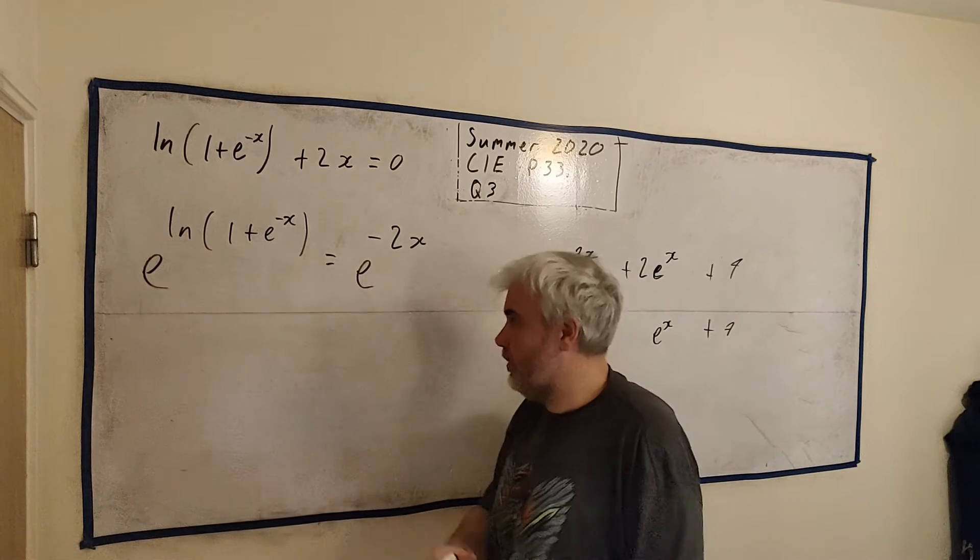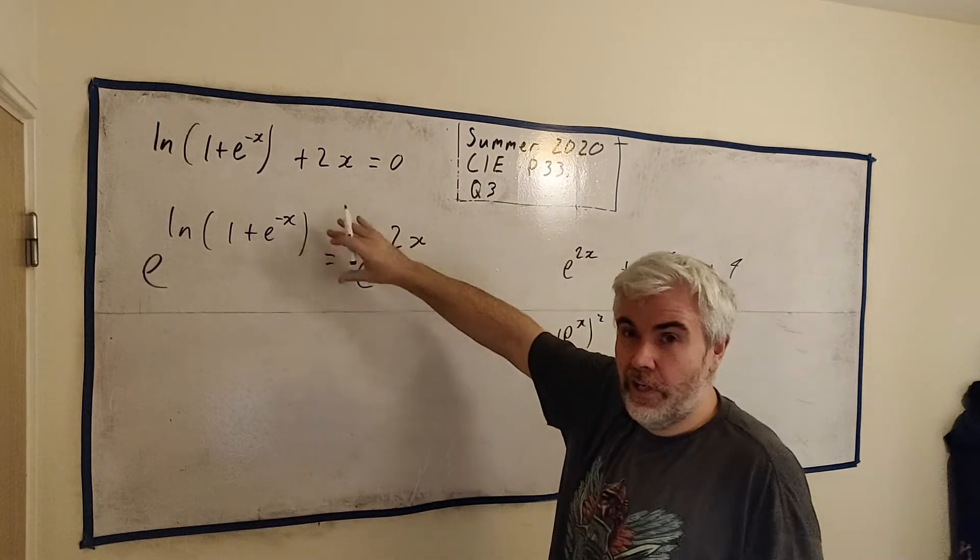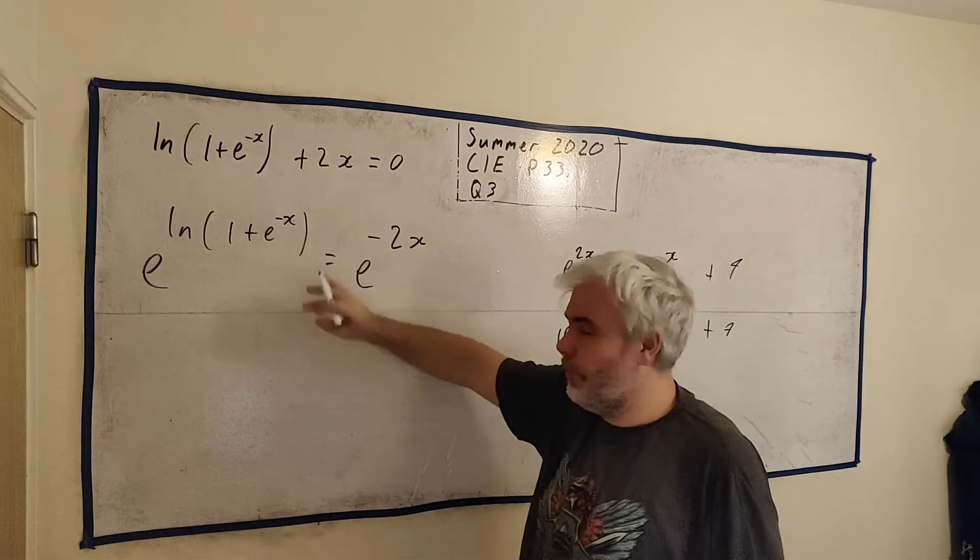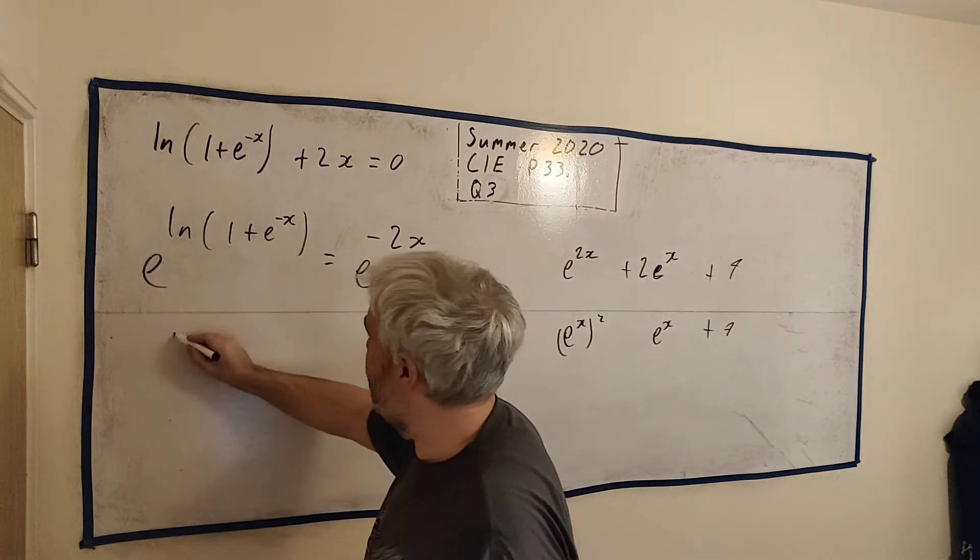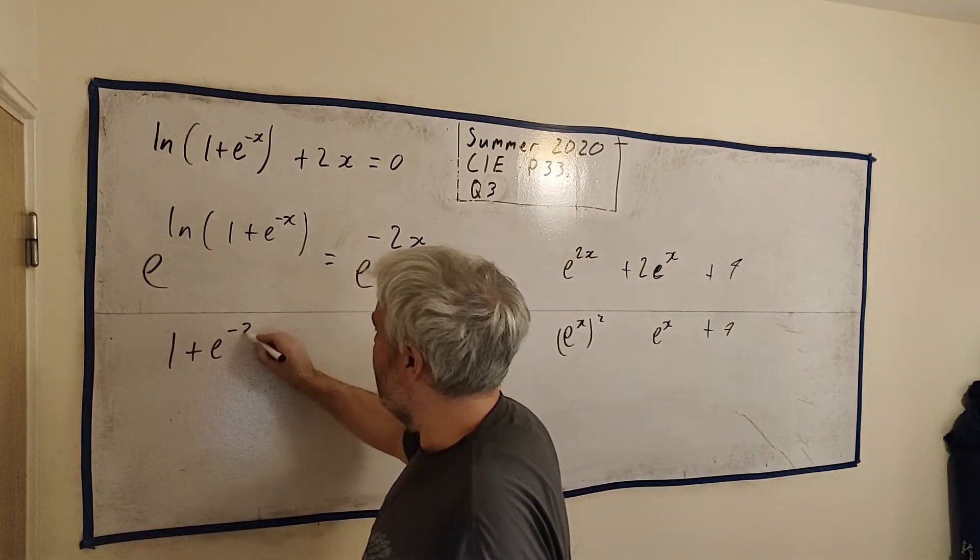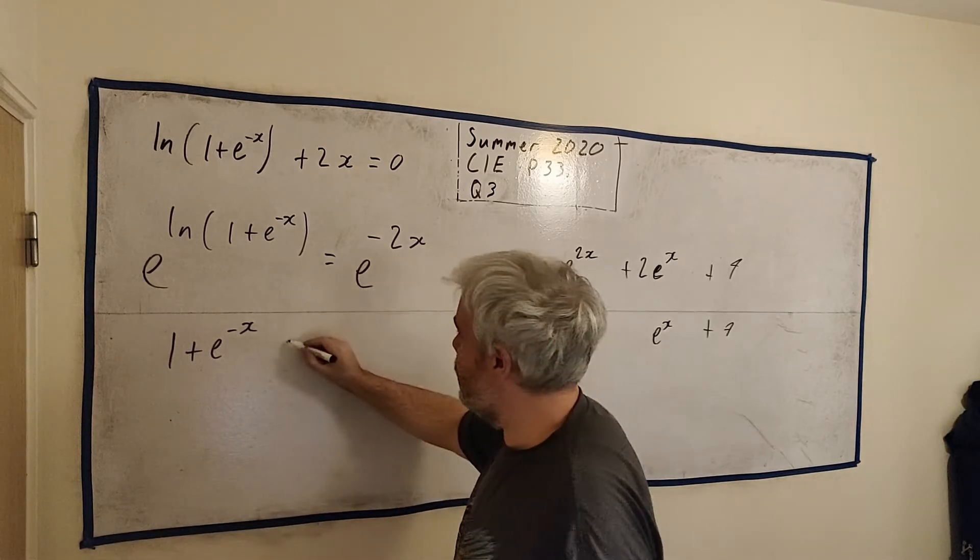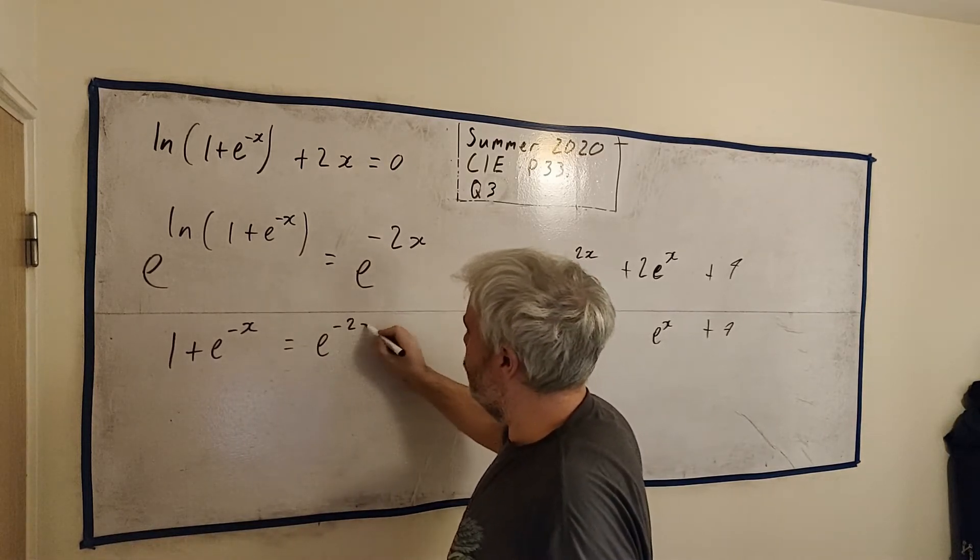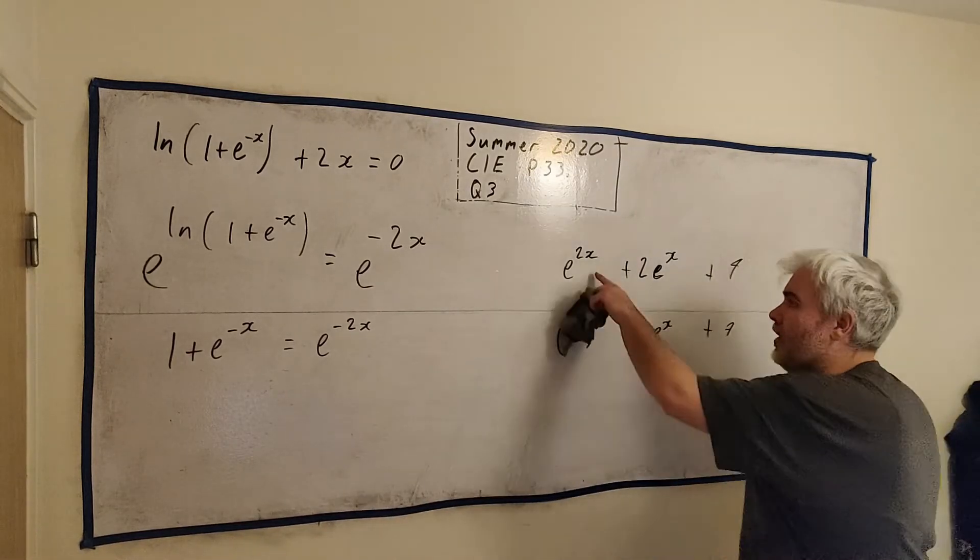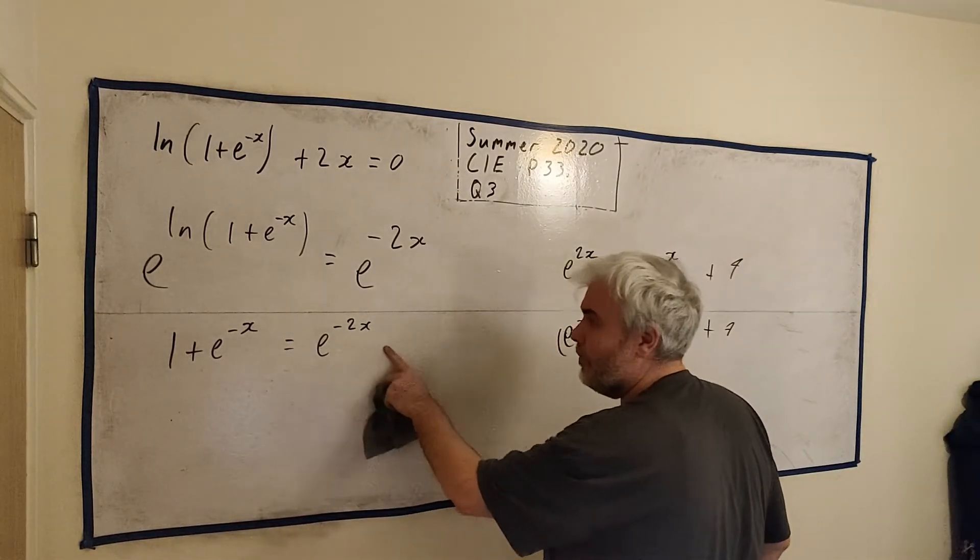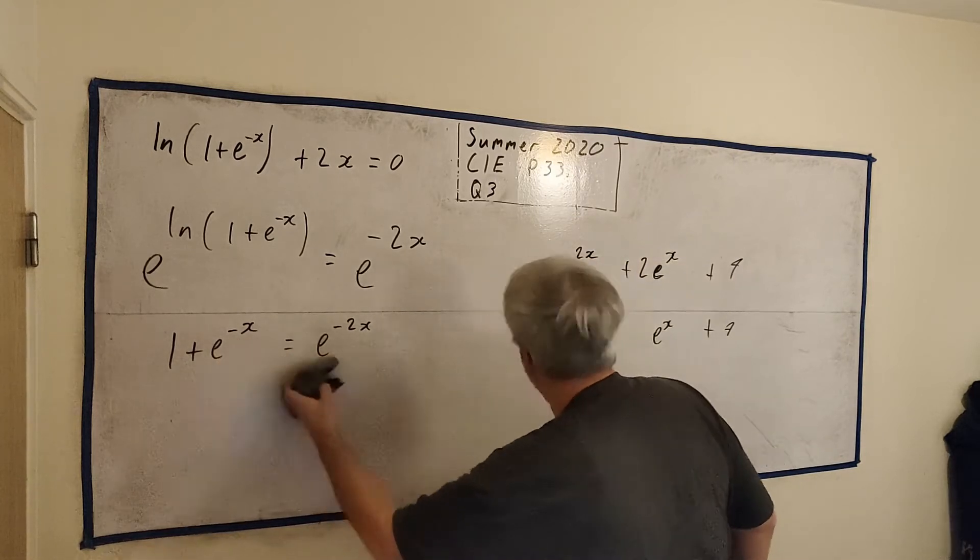And what happens? The e destroys the natural log. I shouldn't really have wrote the line like that, it's just easy to do on the board. I'd write it again. So e destroying natural log will become 1 + e^(-x). And on the other side, e^(-2x). Now we've got what I said we were hoping to get. Some e to the power of 2 something and e to the power of 1 something.